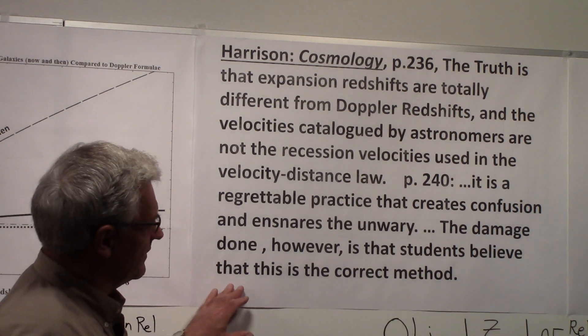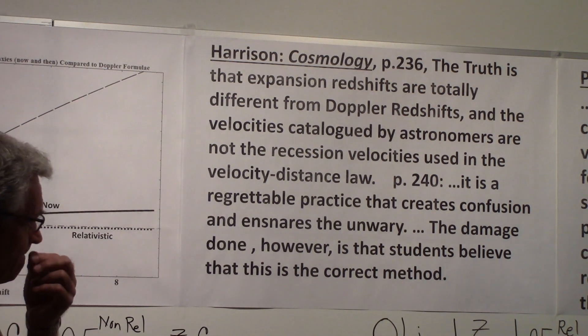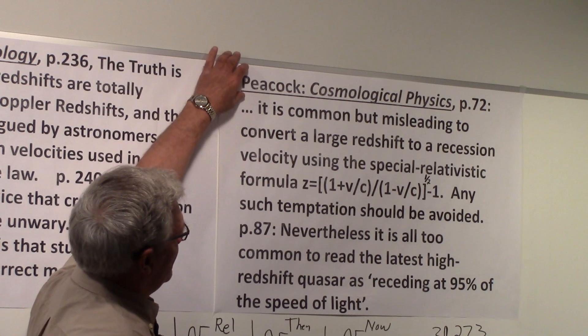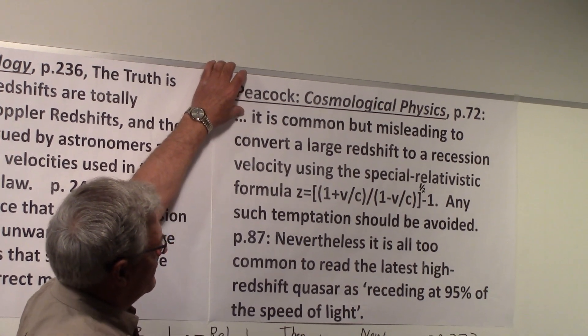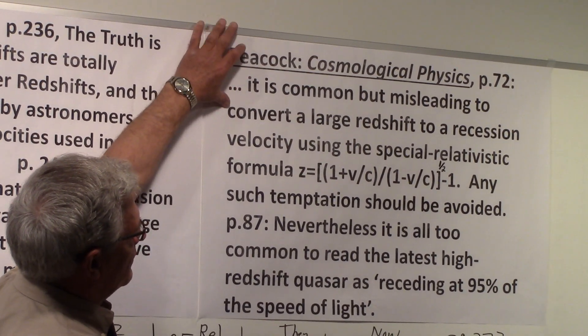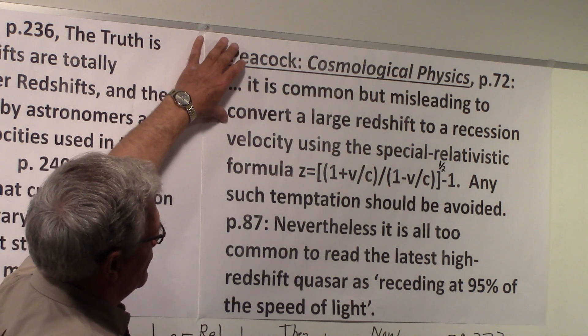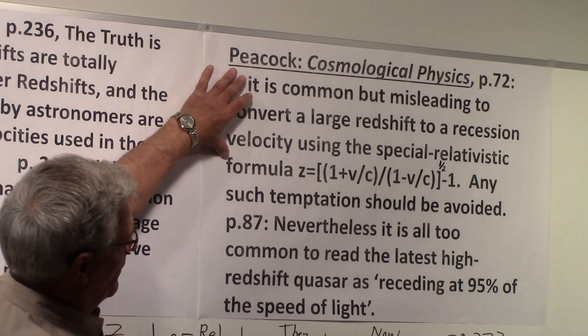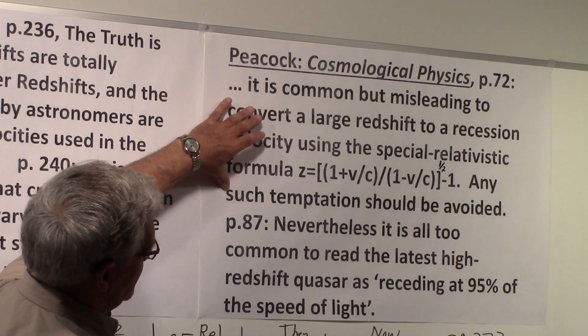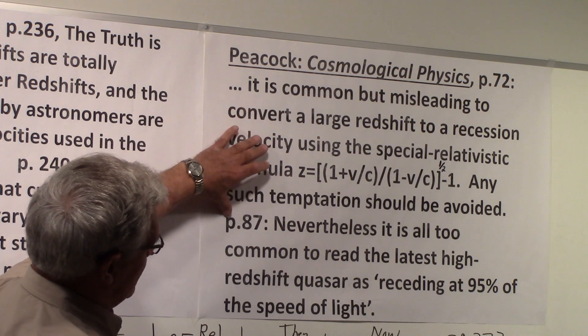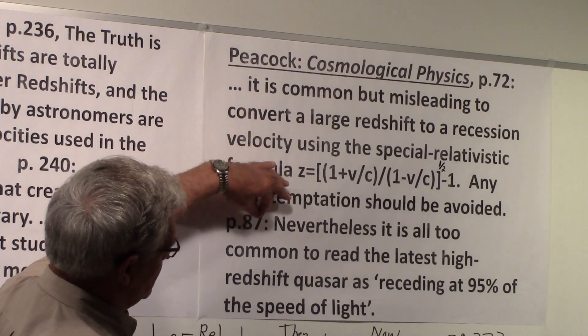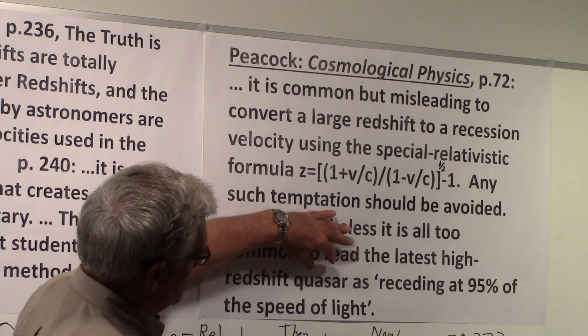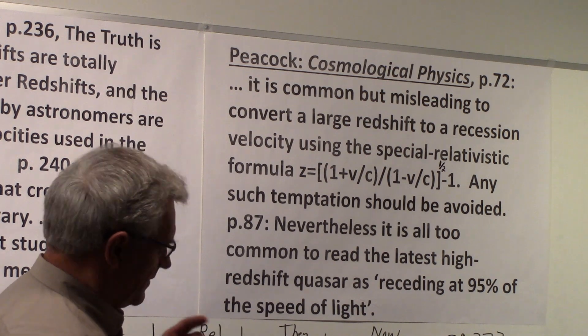On page 240, he says, 'It is a regrettable practice that creates confusion and ensnares the unwary. The damage done, however, is that students believe that this is the correct method.' In a book titled Cosmological Physics by Peacock, page 72, 'It is common but misleading to convert a large redshift to a recession velocity using the special relativistic formula, which is another form for what we had over there. Any such temptation should be avoided.'